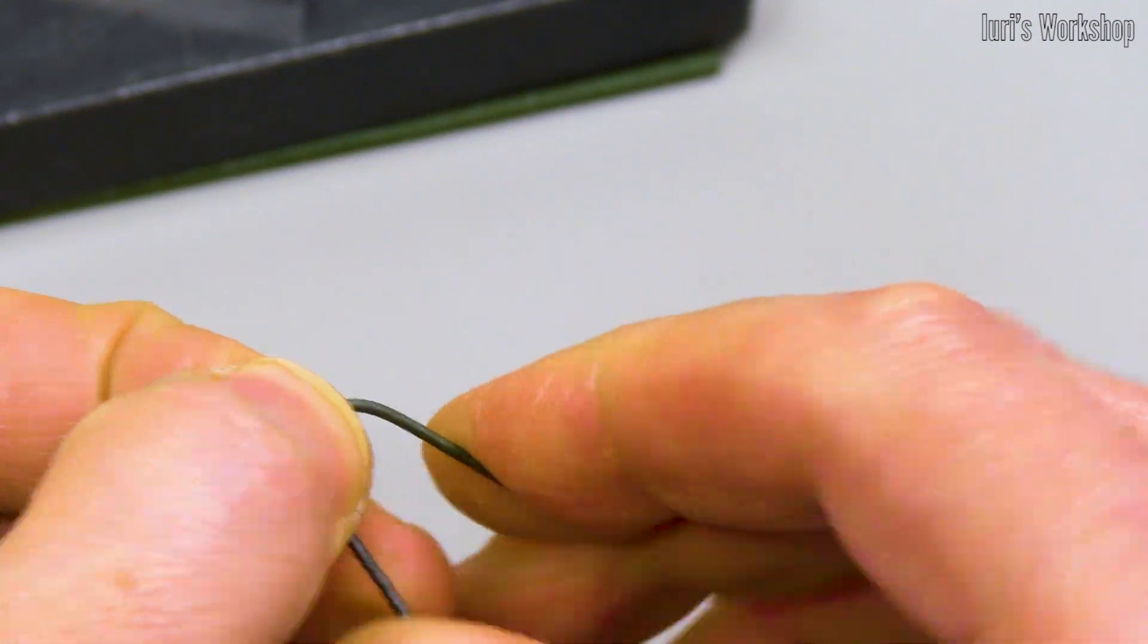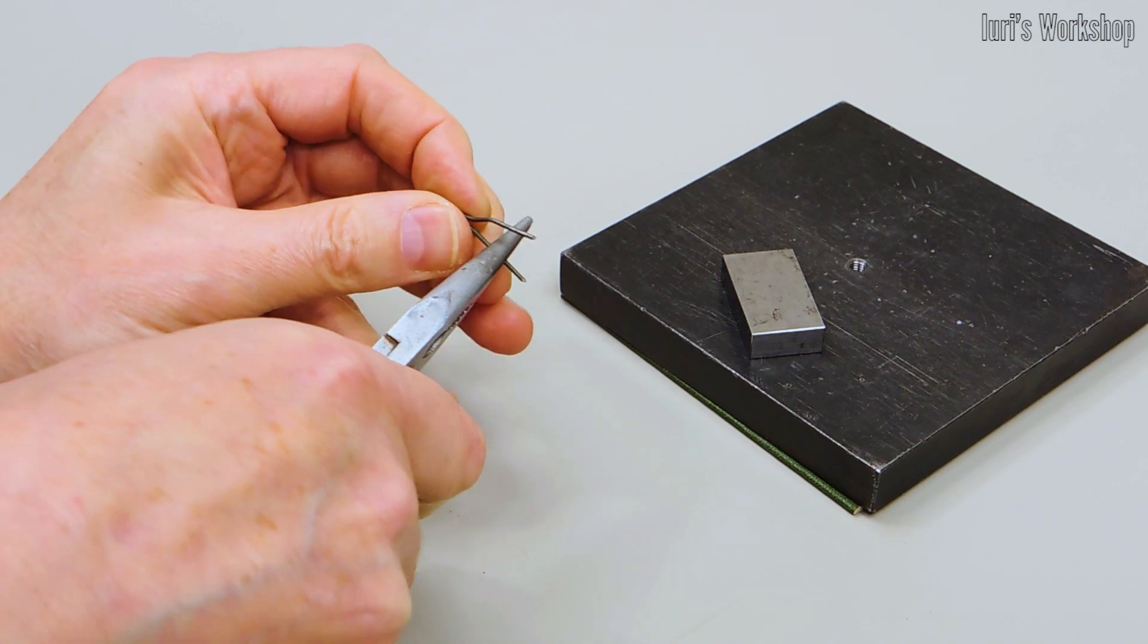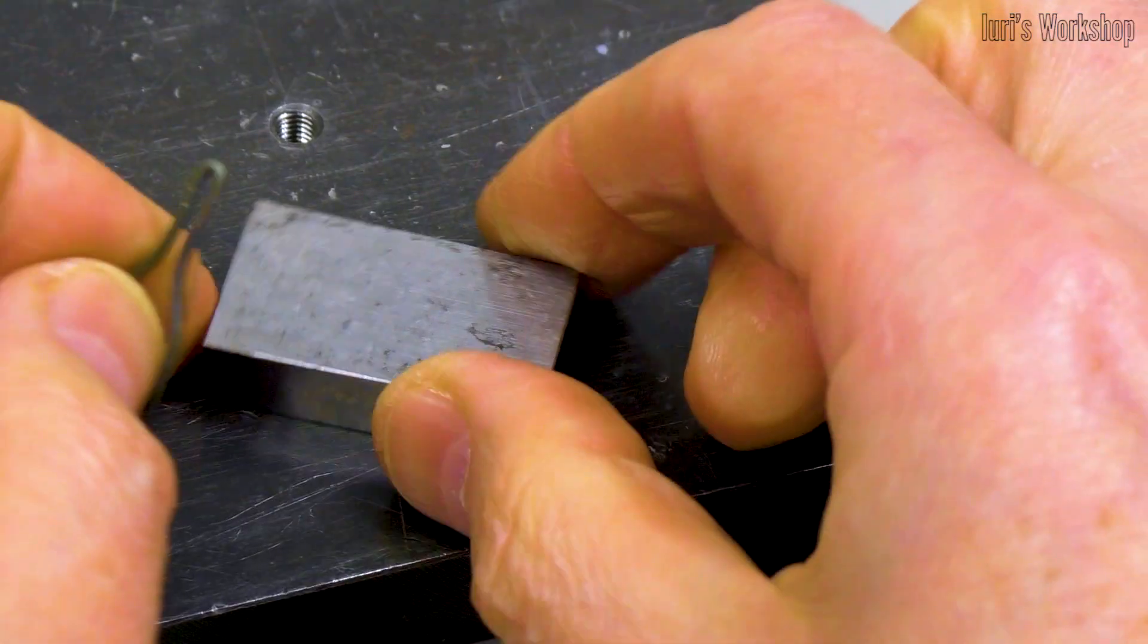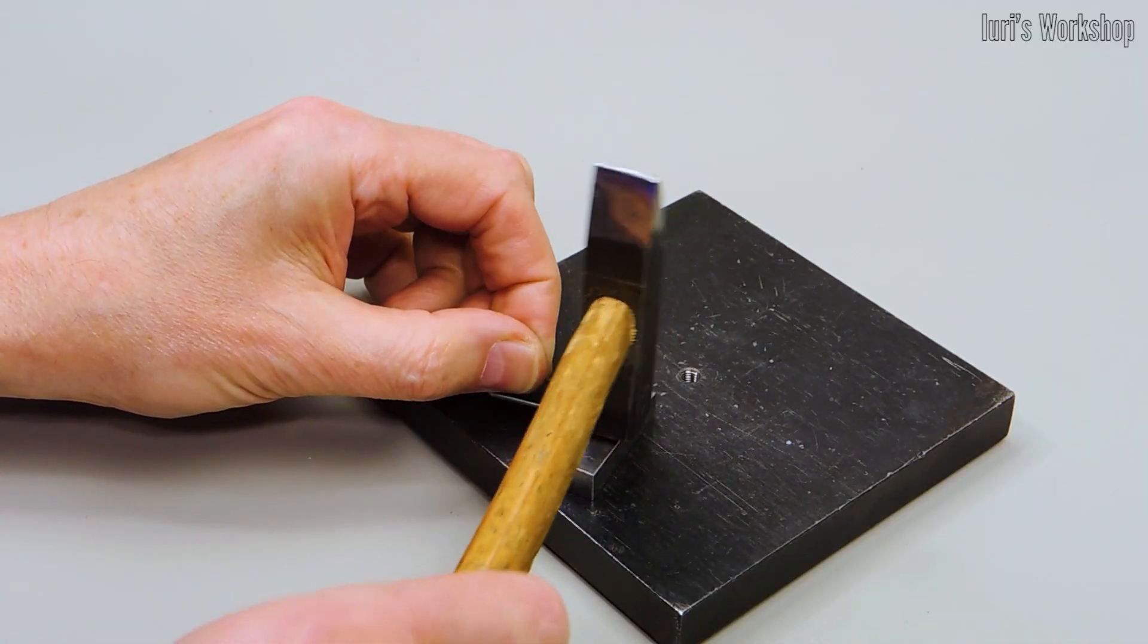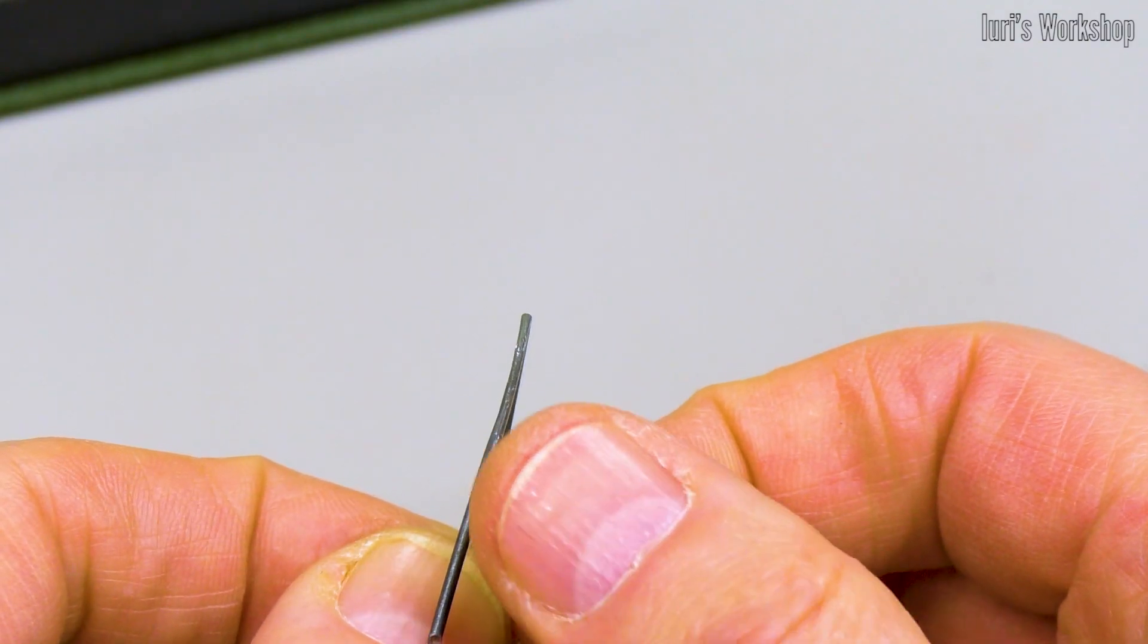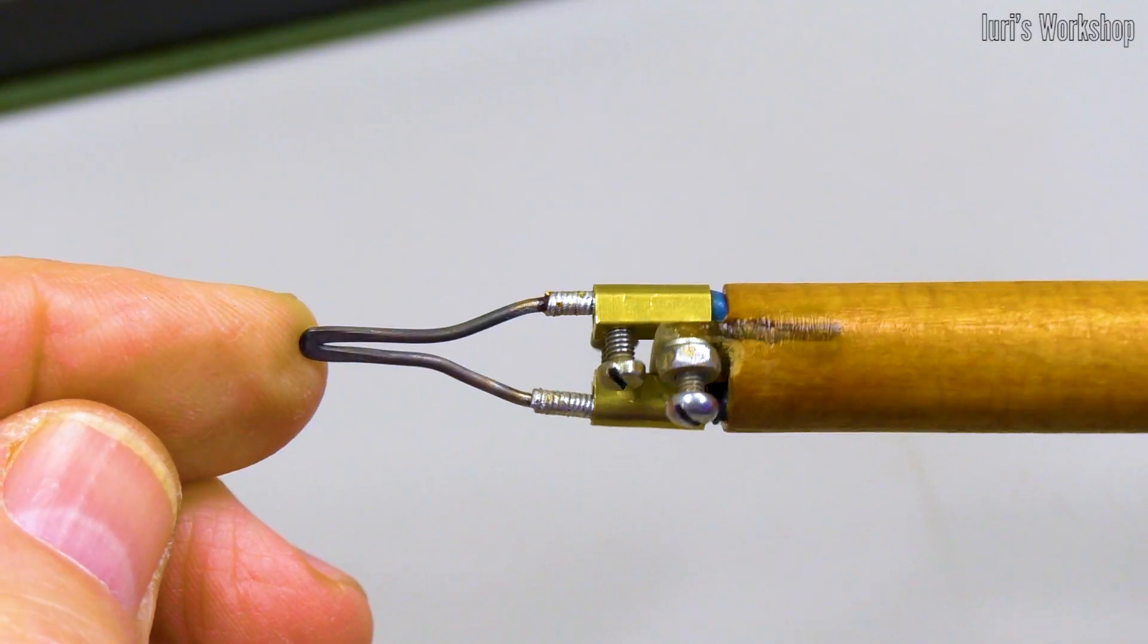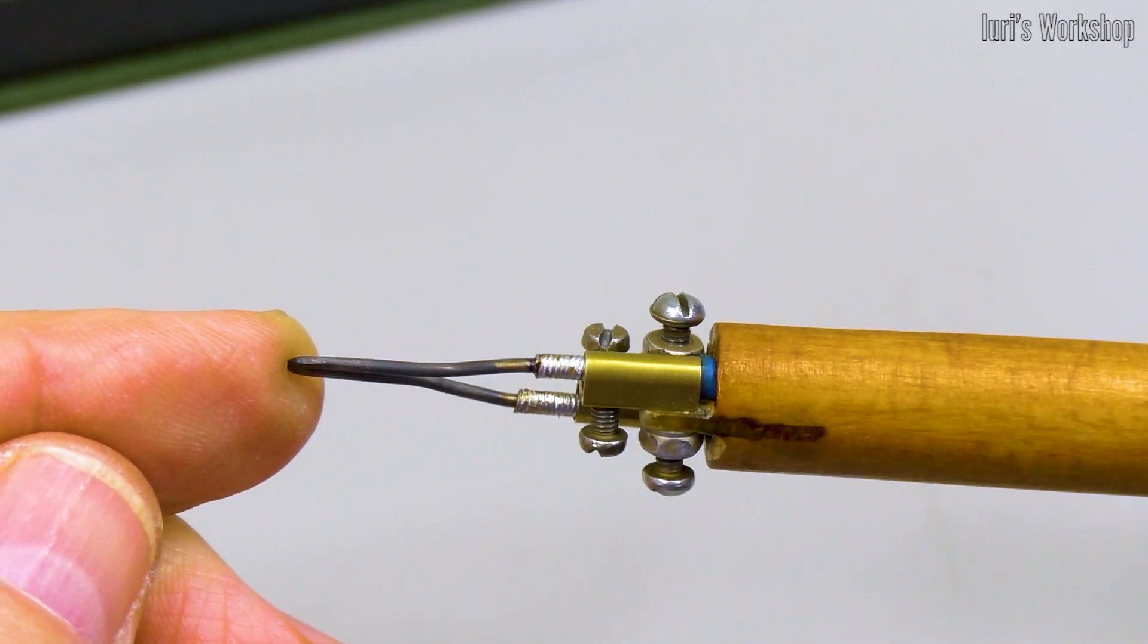Using pliers and a hammer, you can make any shape for a wood burning pen tip. I made a pen tip suitable for burning thick lines using a 1.2 millimeters nichrome wire. A link to the manufacture of the remaining parts of this device is in the description of the video.